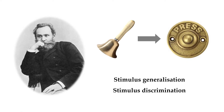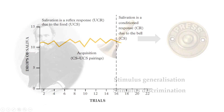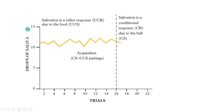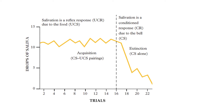Pavlov also wondered: once the dogs have been conditioned to the sound of that ringing bell, what if you continued to ring the bell but didn't provide any food? You can see here on this wonderful axis — I don't think I've ever read 'drops of saliva' as a description before — that the dogs are salivating anywhere between 10 and 12 drops per trial when they hear the bell. Clearly conditioning has occurred. But then once you start ringing the bell and not providing food on the 17th, 18th, 19th, and 20th time, you can see the drops of saliva go down very quickly, and we would call this drop in response extinction.